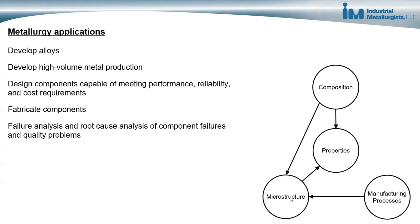By understanding metallurgy — the relationship between a metal's properties, its composition, microstructure, and manufacturing processes — we can do a lot in engineering. We can develop different alloys for specific applications with high performance, reliability, and cost requirements. We can also develop high-volume metal production processes that consistently produce metal meeting property requirements, and design components capable of meeting performance, reliability, and cost requirements by selecting metals and processes that result in the right microstructure and composition.